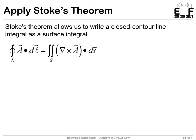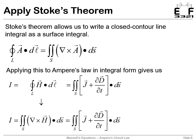To get Ampere's law in differential form, we apply Stokes' theorem. Stokes' theorem converts a closed contour line integral of A into a surface integral where we're integrating the curl of A. In Ampere's circuit law, we had a closed contour line integral, so we can replace that with a surface integral where we have the curl of H.